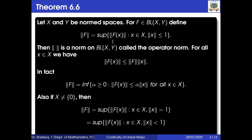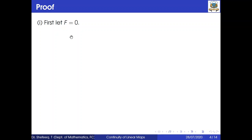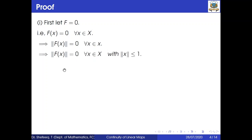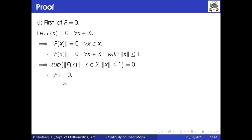We want to show that the norm defined this way is a norm on BL(X,Y), so we verify all the properties. First, let f = 0, so f(x) = 0 for all x in X. This implies ||f(x)|| = 0 for all x in X, and in particular for all x with ||x|| ≤ 1. Therefore, the supremum of ||f(x)|| over x with ||x|| ≤ 1 equals 0, which means ||f|| = 0.